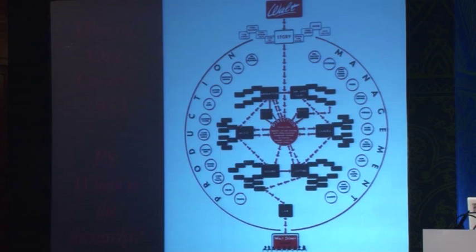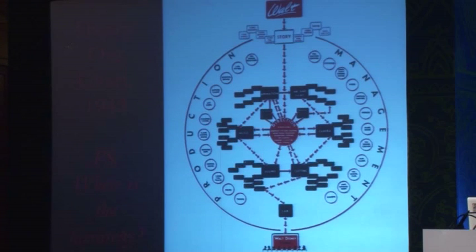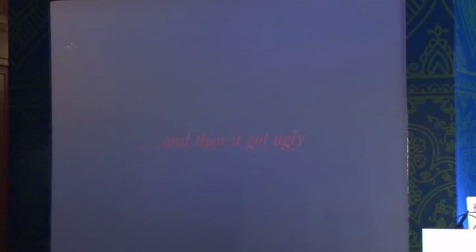Walt Disney Company, which started in 1938, came up with their own org chart within five years of operation. The best part is that org chart reflects how the work was done — you don't really see hierarchy, you don't see people deeply buried under those hierarchies. So we started on a right footing, but then somewhere it got a little complex, a little ugly.